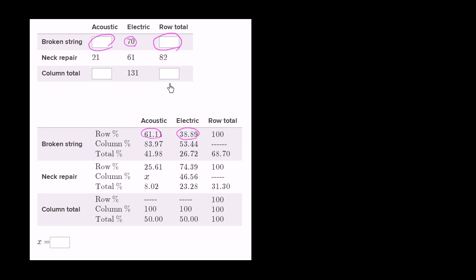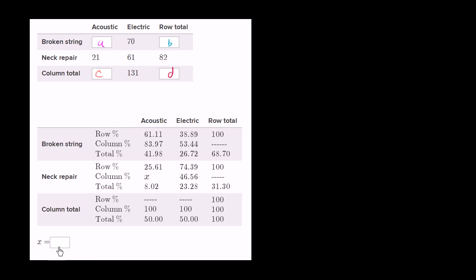Let's see if we can use that information to figure out all of this. I encourage you to pause the video and try it on your own first. To simplify things, I'll label the unknowns with letters: let's call this A, this B, this C, and this D. And they are saying that this value right over here is X, so we'll leave that as X.